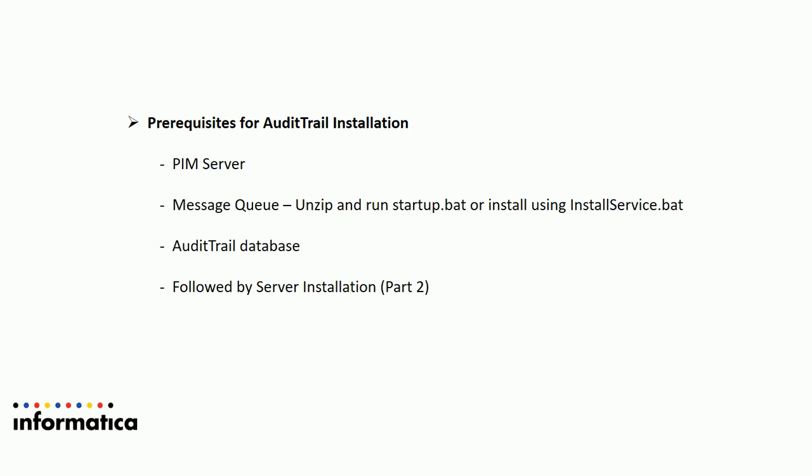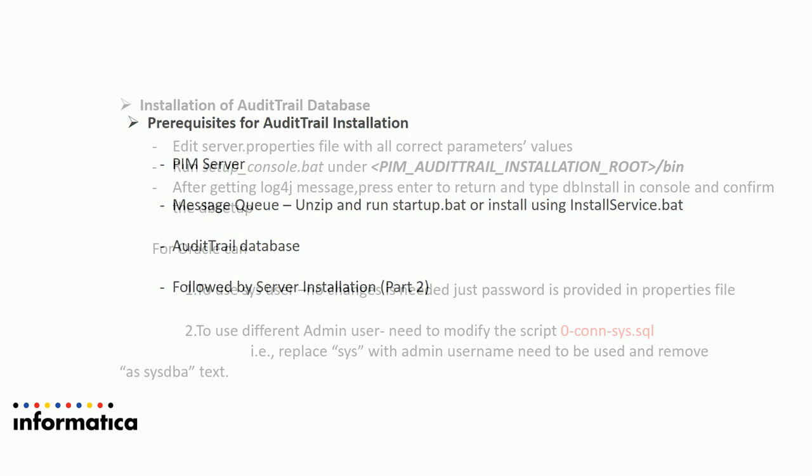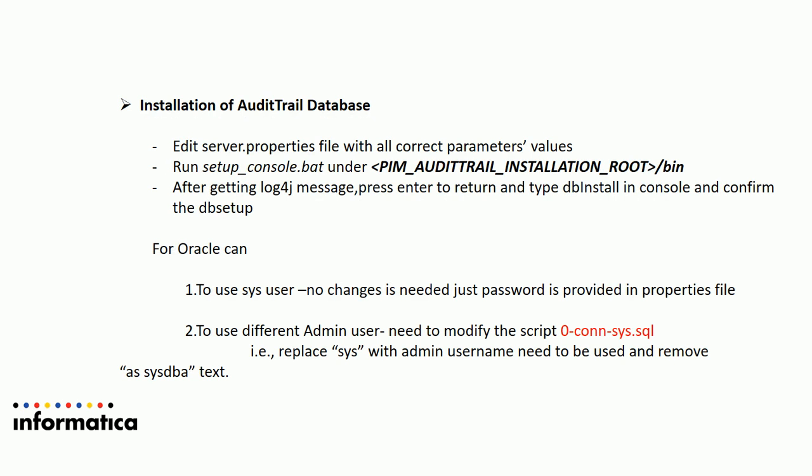Next, you need an audit trail database, followed by audit trail server installation, which will be covered in part 2. For part 1 — installation of the audit trail database — you first need to edit the server.properties file from the package with the correct parameter values, then run the setup_console.bat file found under the bin directory of the audit trail installation root path. Once you get a prompt, type the db install command followed by confirmation to create the database.